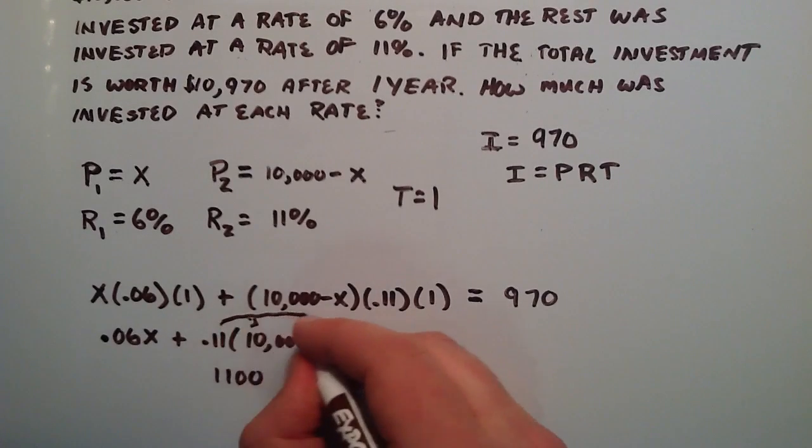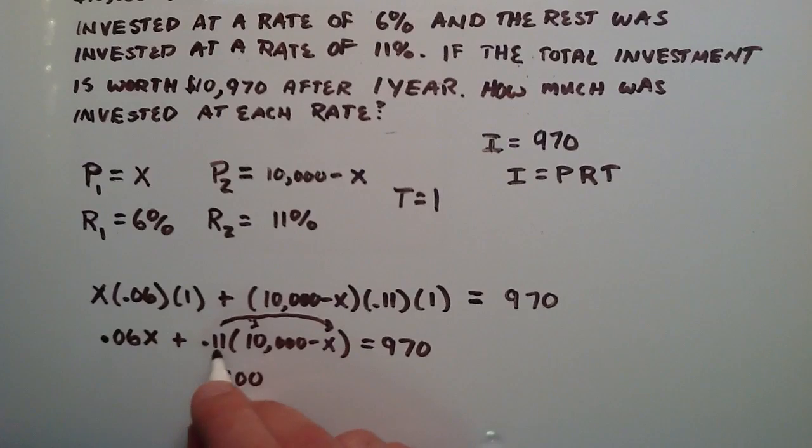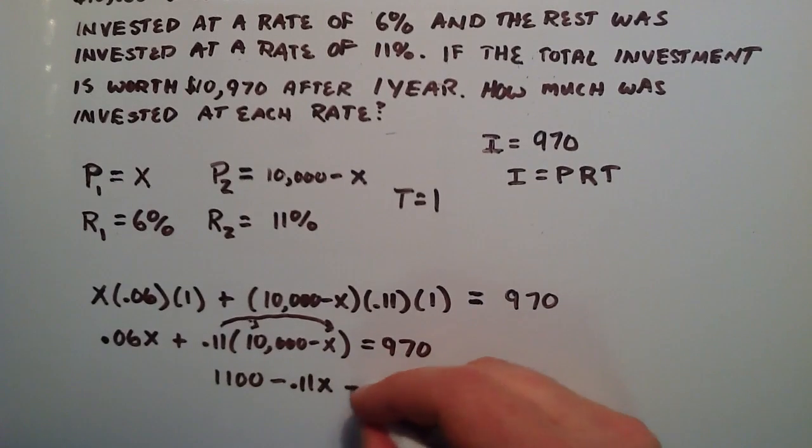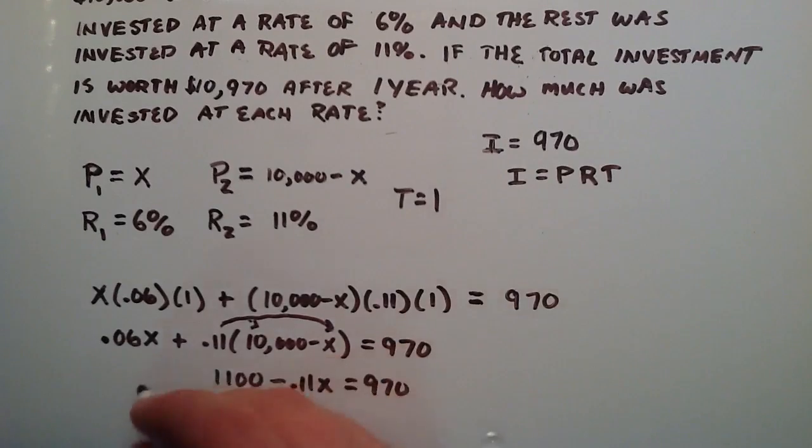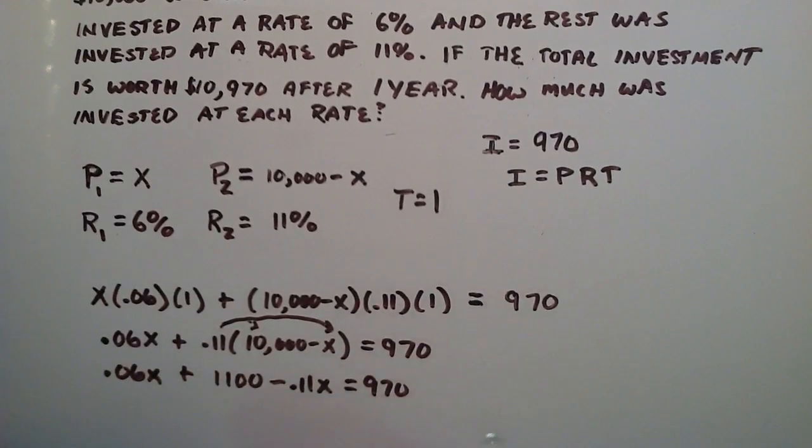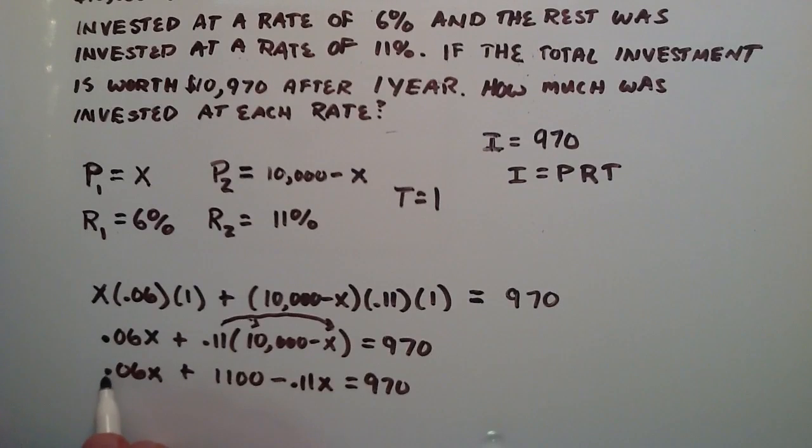And then we're going to distribute that into the second term. .11 times a negative X is going to give us minus .11X equals 970. And then picking up this other term right here is .06X. So the next thing we're going to do is we're going to take .06X and subtract .11X. We're combining these two like terms.